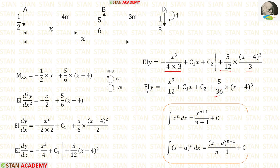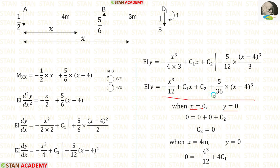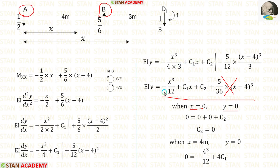Then let us integrate this equation again. When we integrate, we will get EI·y. Using the formulas, we integrate the two terms, where C2 is the new constant. 4 times 3 gives 12, and 12 times 3 gives 36. At point A there is a vertical support, so the deflection y will be 0. Let us apply x equals 0 and y equals 0. We must be careful not to consider the second portion, which is only applicable beyond point B. We get C2.